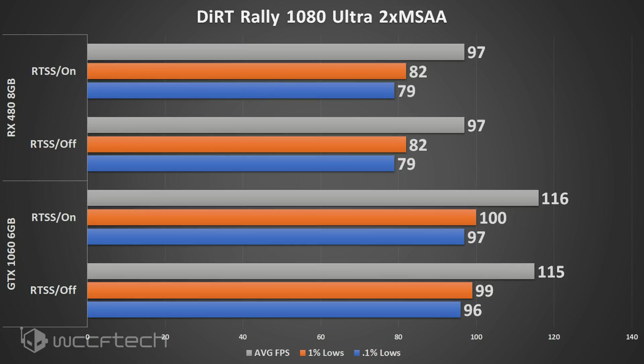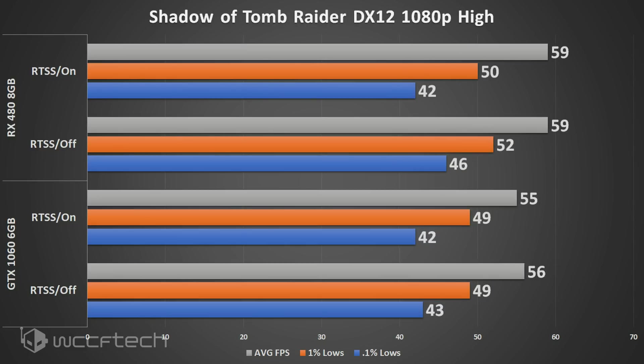Moving over to Shadow of the Tomb Raider, interestingly enough there is an impact on the lows. The average not so much, but the 1% and 0.1% lows on the RX 480 were measurably impacted — more than 2 FPS at that low of a frame rate is a real difference. It definitely impacts it there.